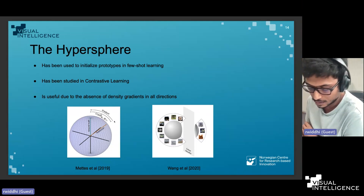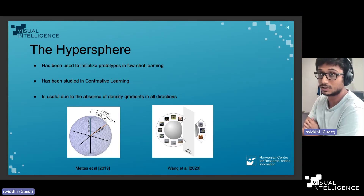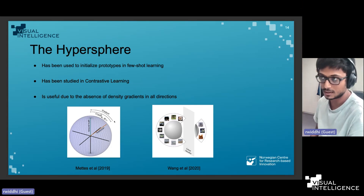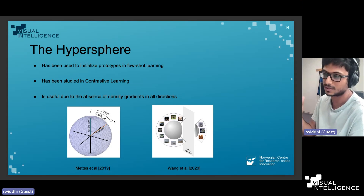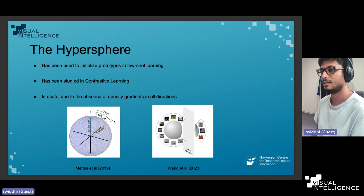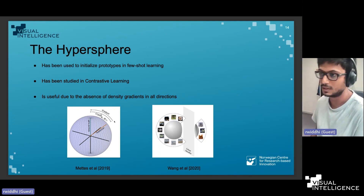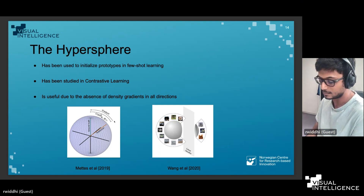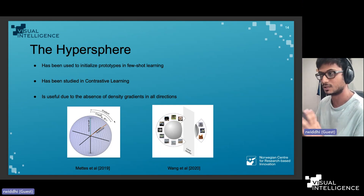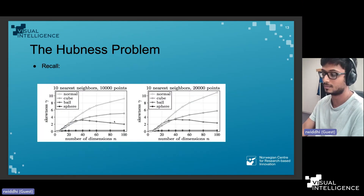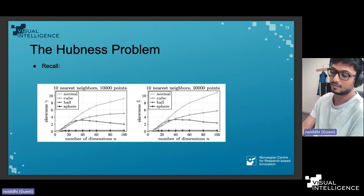Using the hypersphere as an embedding space is not new in deep learning — it has been popular recently and has been used in few-shot learning to initialize prototypes in prototypical networks, and also in contrastive learning. The key theme, which we also prove in our paper, is that if you have the hyperspherical uniform distribution, you can show there is an absence of density gradients in all directions — and according to results from that paper ten years ago, this implies zero hubness.